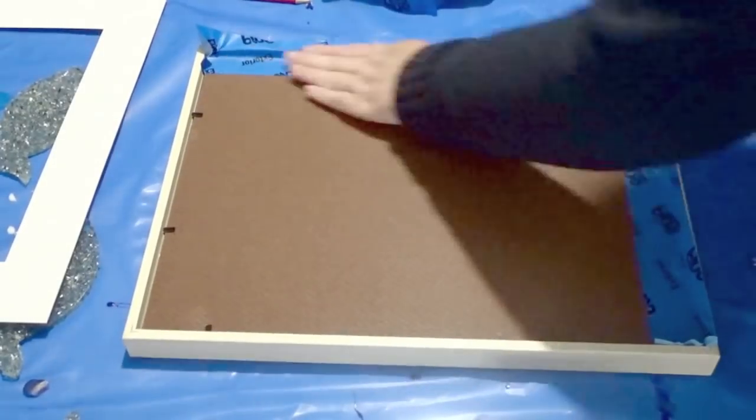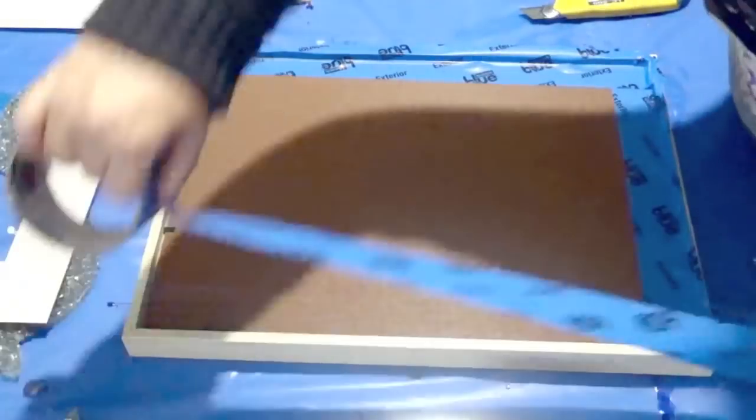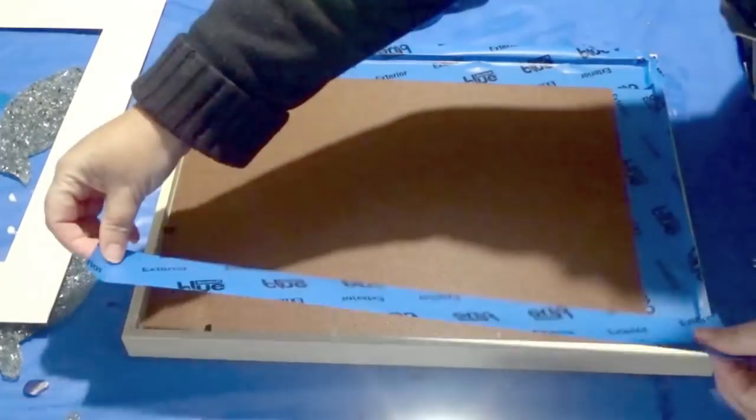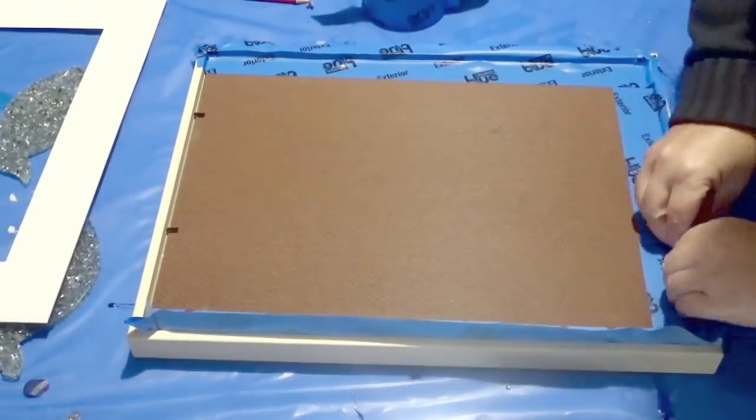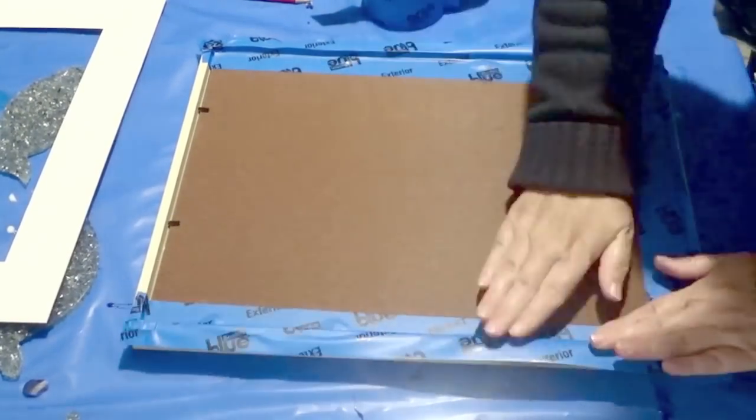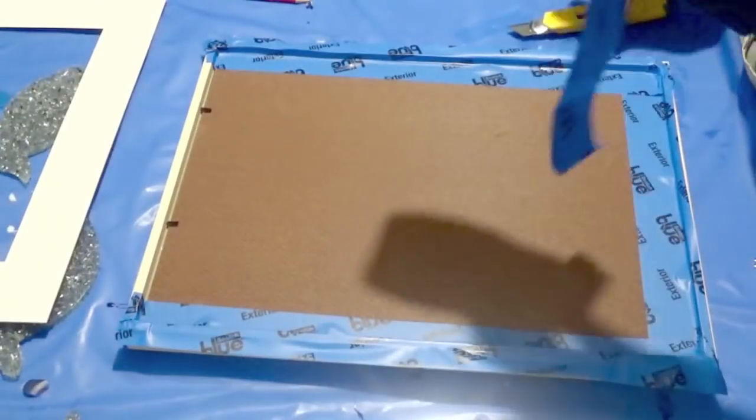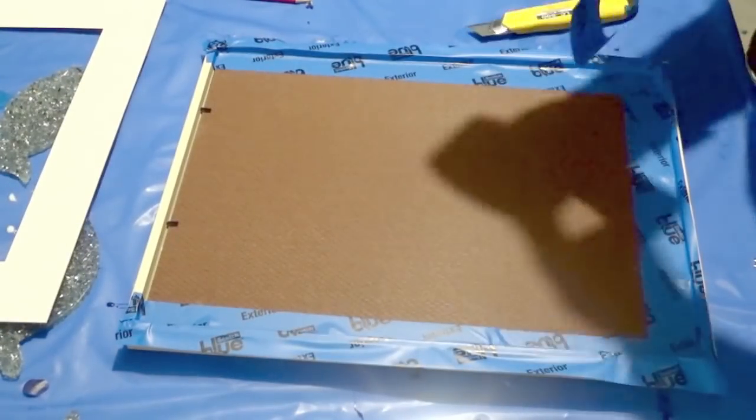But having said that, if it does pour onto the frame, I've found with the IKEA frames the resin doesn't stick to it because it's a plastic so it's quite easy to remove. Just a little bit of heat and it comes right off so that's not going to be an issue. This just keeps it a little bit tidier when you're pouring.